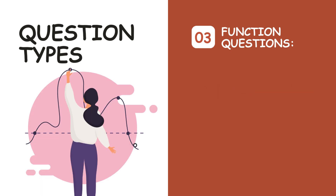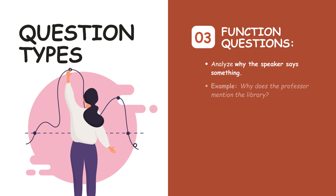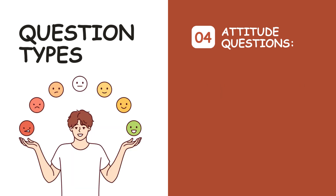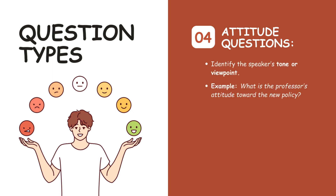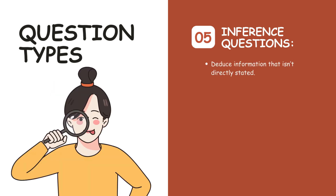Function questions analyze why the speaker says something. Example: 'Why does the professor mention the library?' Attitude questions identify the speaker's tone or viewpoint. Example: 'What is the professor's attitude toward the new policy?' Inference questions ask you to deduce information that isn't directly stated. Example: 'What can be inferred about the speaker's opinion?'